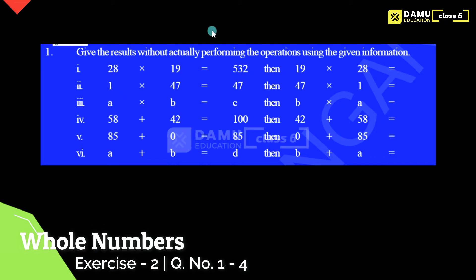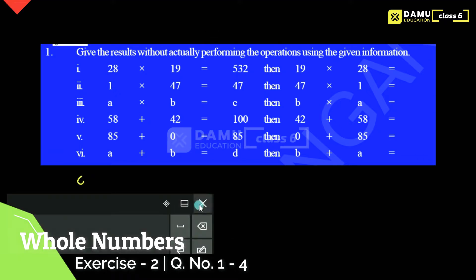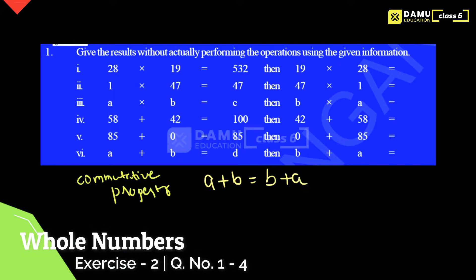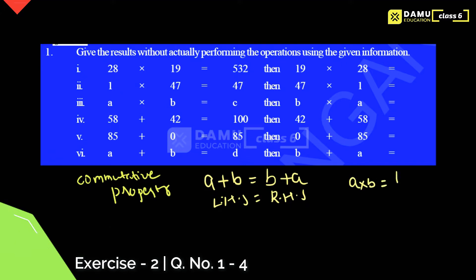So here you need to remember one rule: the commutative property — for addition and for multiplication. What is meant by commutative property? If you take a plus b, and then add b plus a, you will get the same answer. So LHS will be equal to RHS — that is, left-hand side equals right-hand side. a plus b is equal to b plus a; even if you change the order, you get the same answer.